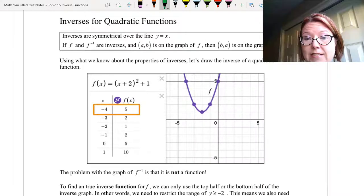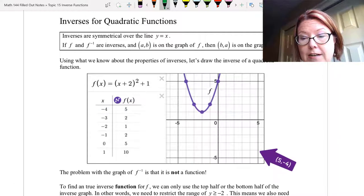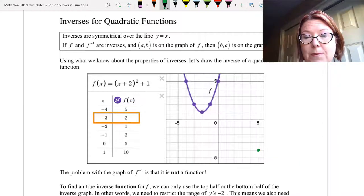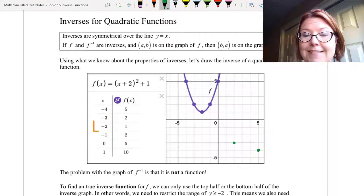So the first point I have is at (-4, 5), so I'm going to graph something at (5, -4). The next point is (-3, 2), so I'm going to graph something at (2, -3). The next point on f is (-2, 1), so I'm going to graph something at (1, -2).